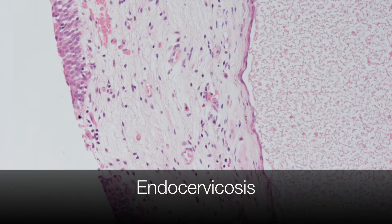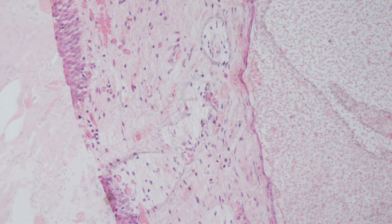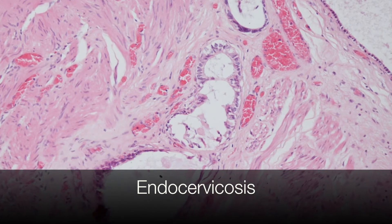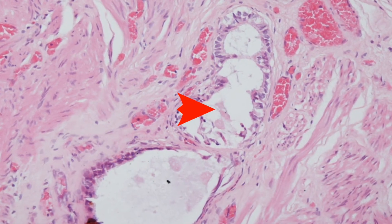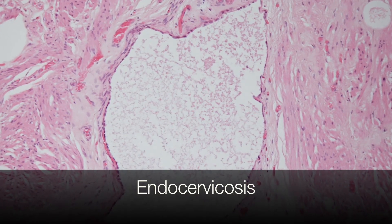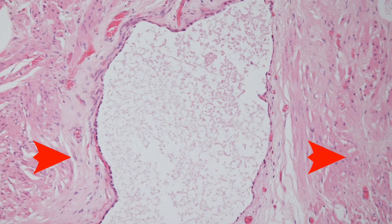This is a high-power view of the endocervicosis in the bladder. You can see normal urothelium on the left. On the right is part of the cyst lined by a single layer of flattened epithelial cells. In this focus there are smaller glands lined by columnar epithelial cells. This piece of bladder wall shows a focus of endocervicosis in the deep muscle.